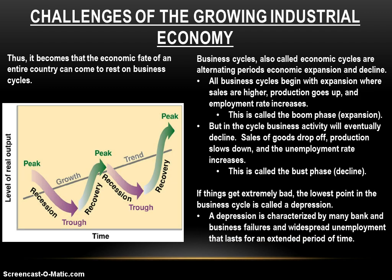In a capitalist economy, the business cycle is a normal part of the economic life cycle — just normal alternating periods of economic growth and decline, like a roller coaster going up and down. All business cycles begin with expansion, where sales are high, production goes up, you hire more workers because you're producing more, those people have more money and go spend it elsewhere, and the economy grows and flourishes. This is the growth phase or the boom phase — the good times in the capitalist economy, when everyone is making money and unemployment rates are very low.